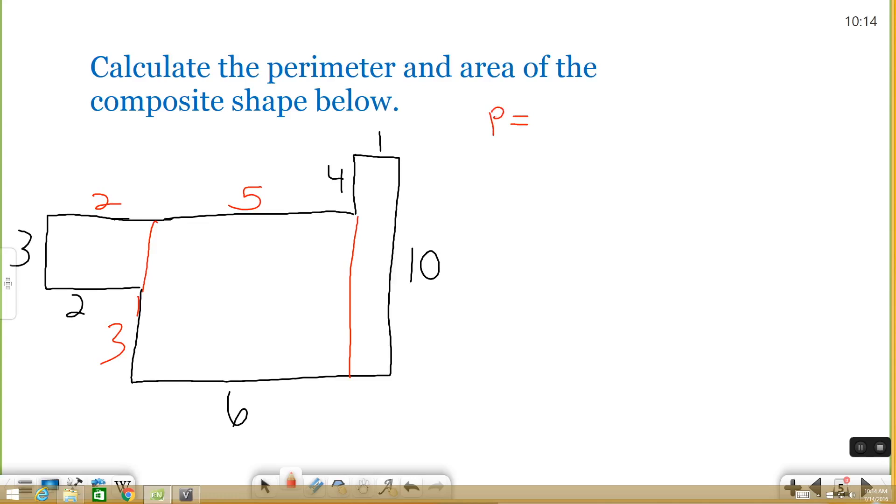Now I can use that information to figure out the perimeter and the area. So the perimeter, to find a perimeter of any shape, you just add up the sides all the way around it. So there's a lot of numbers to add up here. But let's go ahead and start doing that. I start with 1. I have 1 plus 4 is 5. Plus 5 is 10. Plus 2 is 12. Plus 3 is 15. Plus 2 is 17. Plus 3 is 20. Plus 6 is 26. Plus 10 is 36. So 36 units.